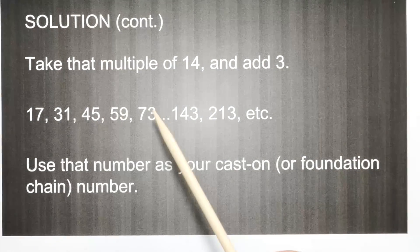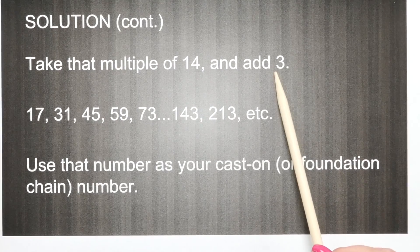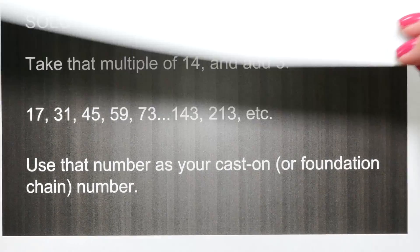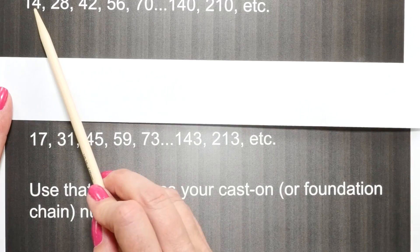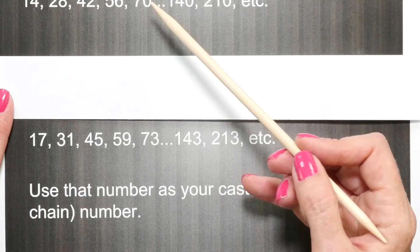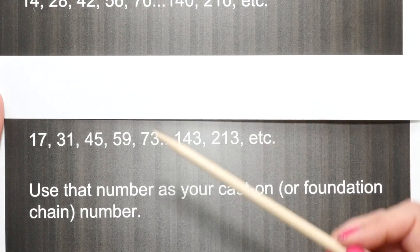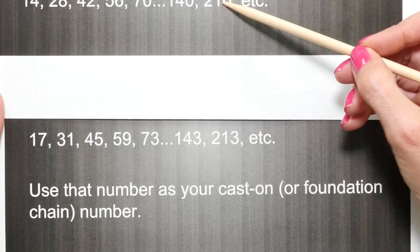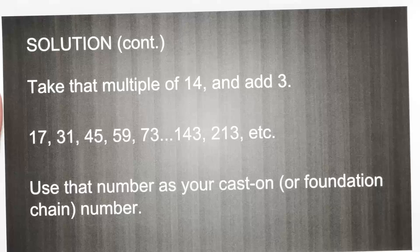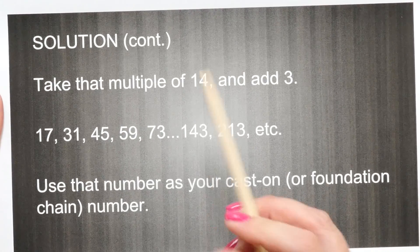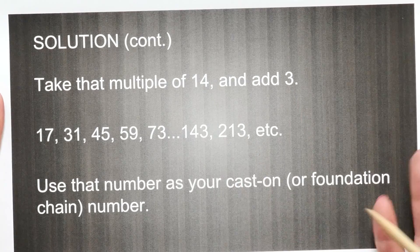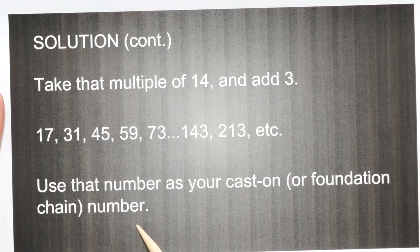Once you have that number, the only thing you have to do is add three to it — not three to every 14, just three one time. So if the number you came up with is 14, add three: 17. If you want to cast on 70 in width, add three: 73. 210 becomes 213. You only add the three one time, once you get to the multiple of the first number you want. When you have this number — the multiple of 14 plus three added — this is your cast on or foundation chain number.